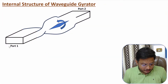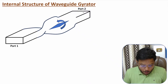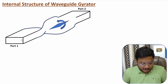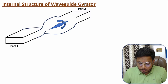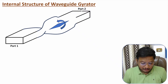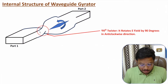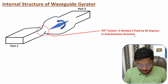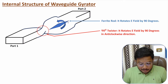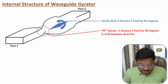If you observe the internal structure, here we have port 1 and here we have port 2. Inside, we have a 90-degree twister, which rotates the electric field by 90 degrees in the anti-clockwise direction. And here we have a ferrite rod, which also rotates the electric field by 90 degrees in the clockwise direction.